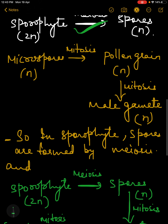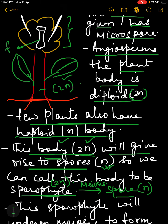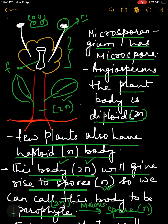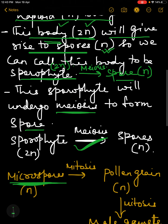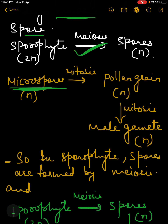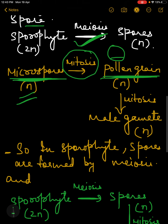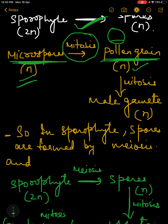Microsporangia will give rise to microspores, and microspores are haploid. These microspores will then undergo mitosis — because they are already haploid — and they will give rise to a pollen grain. The pollen grain will be at a 2-cell stage in 60 percent of cases and a 3-cell stage in 40 percent of cases. The pollen grain is again haploid.